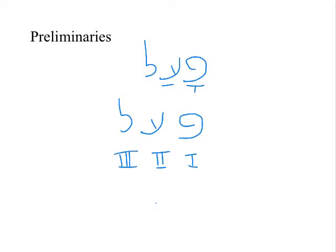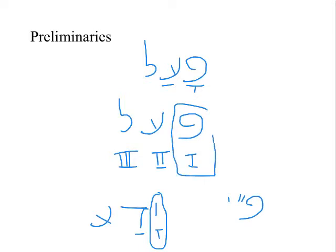So if we take, for example, the verb yada, then this would be considered a pe-yod verb because the first root letter is a yod or the pe-yod letter.